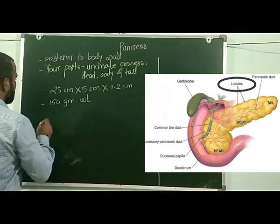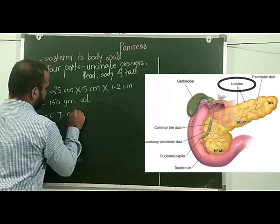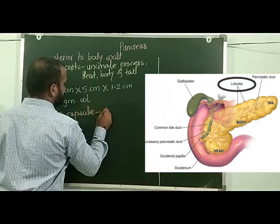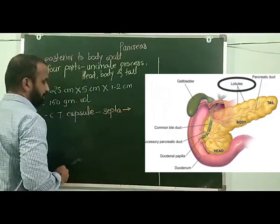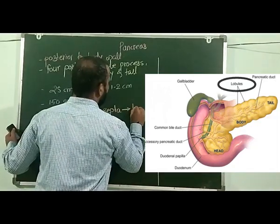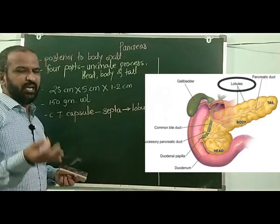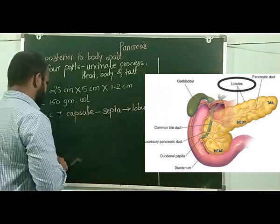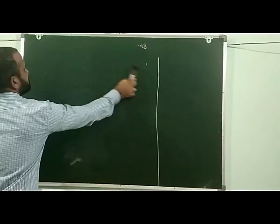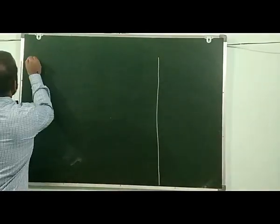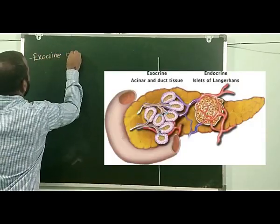The pancreas is covered with a connective tissue capsule that produces septa into the pancreas. As a result, the pancreas is divided into lobules. Through these lobules, the blood vessels and nerves enter and leave the pancreas. The pancreas is a mixed gland since it consists of the exocrine portion and the endocrine portion.